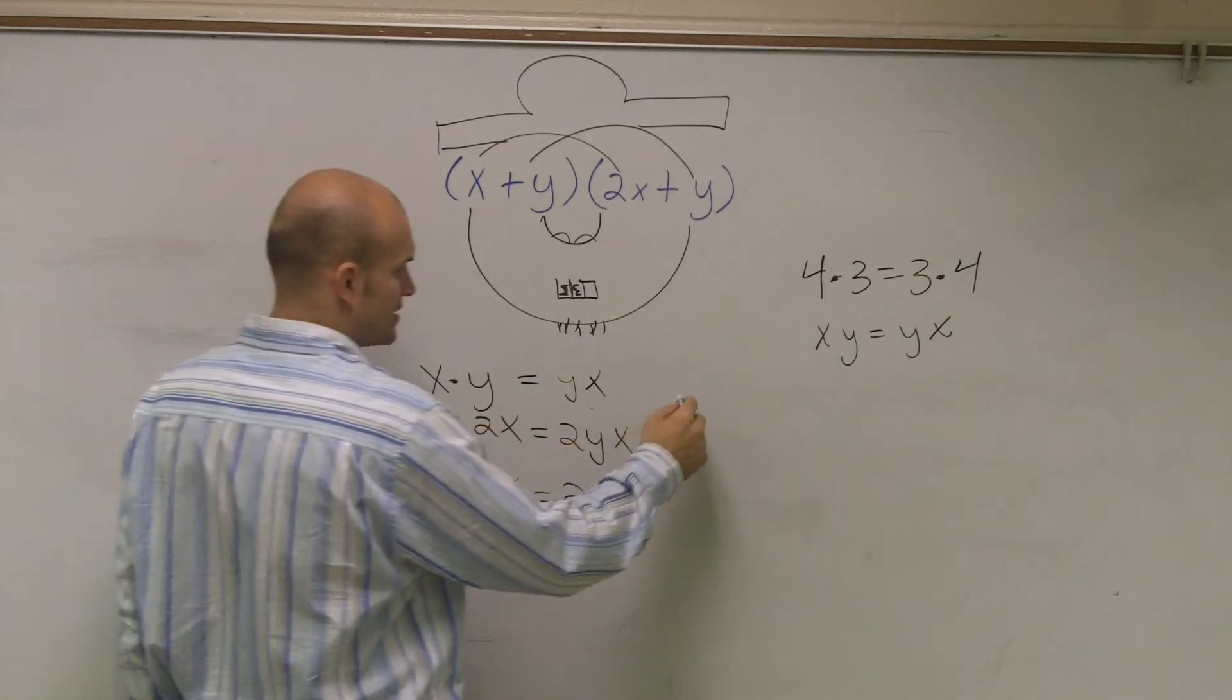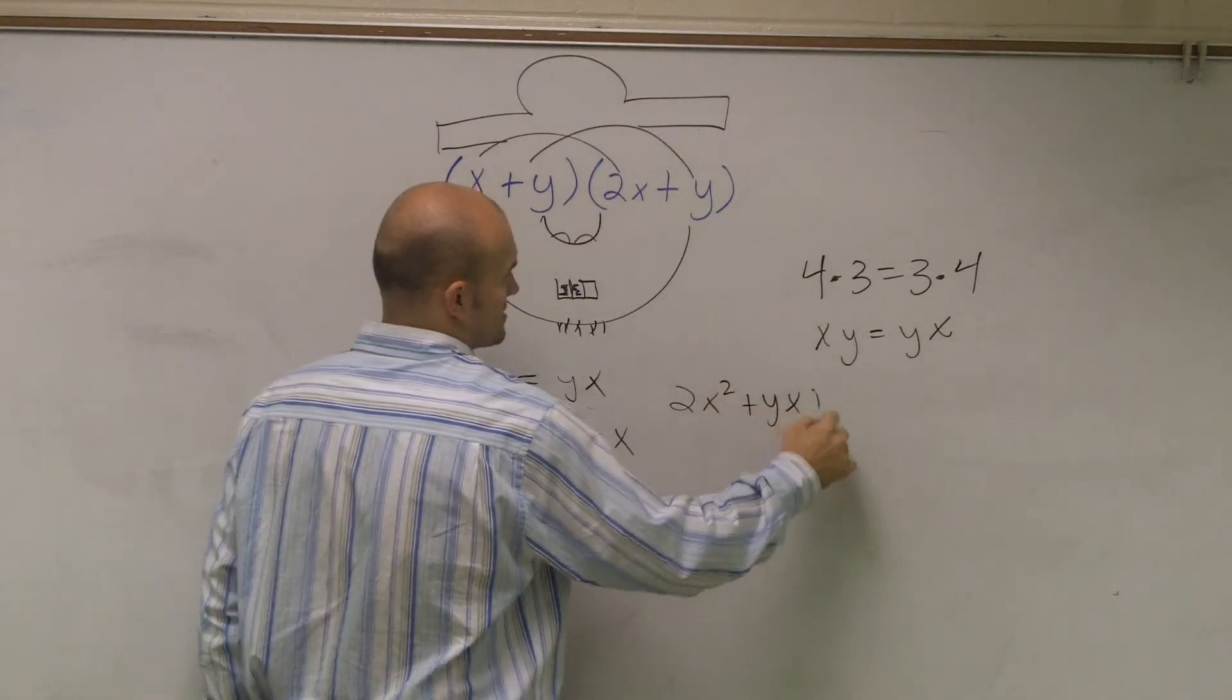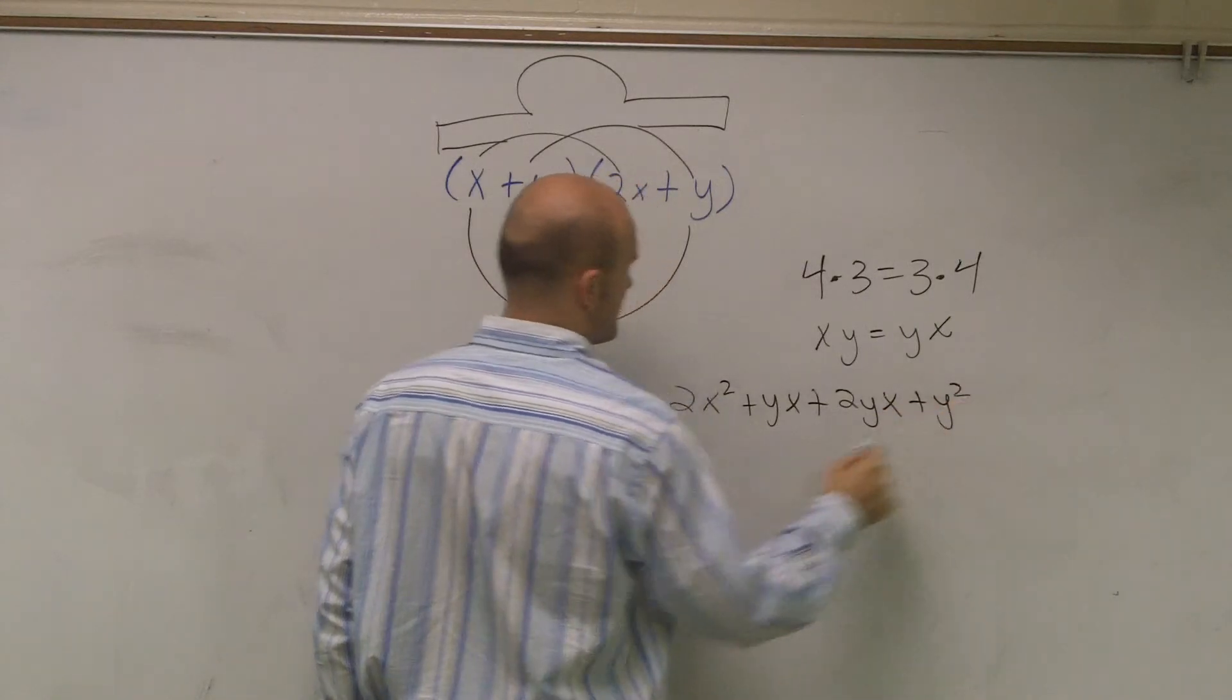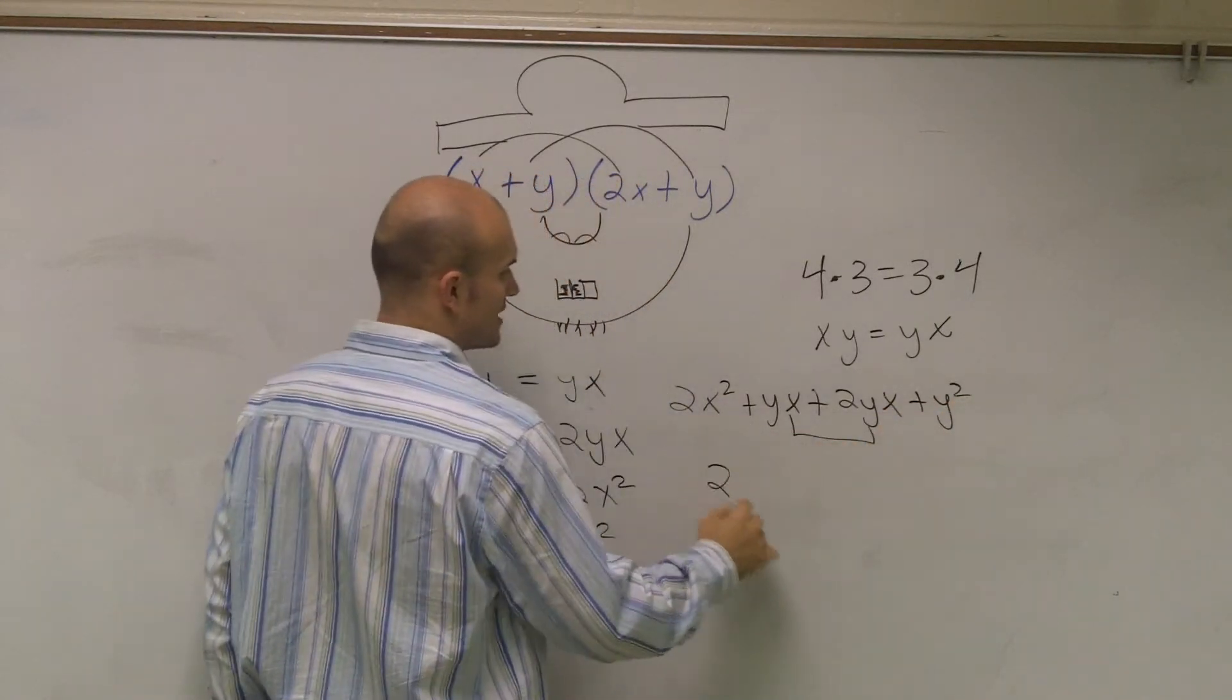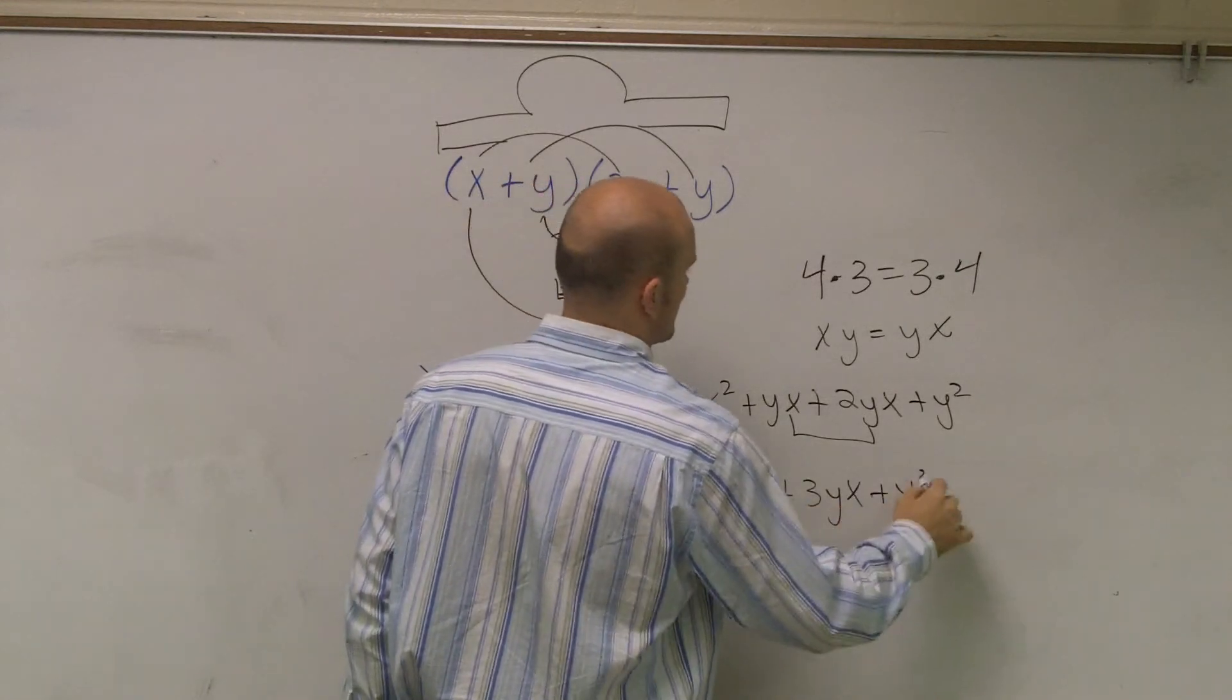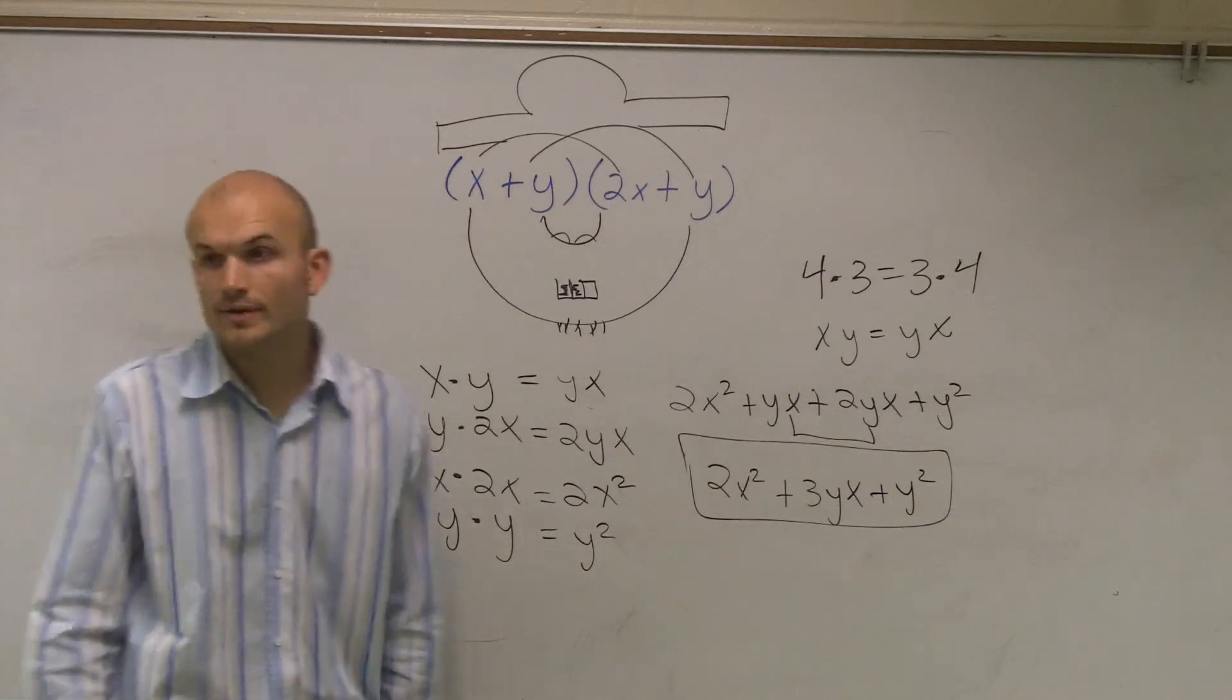Yeah, well, let's just write it all out, actually. Let's write 2x squared plus yx plus 2yx plus y squared. These can combine, so I get 2x squared plus 3yx plus y squared. And there you go.